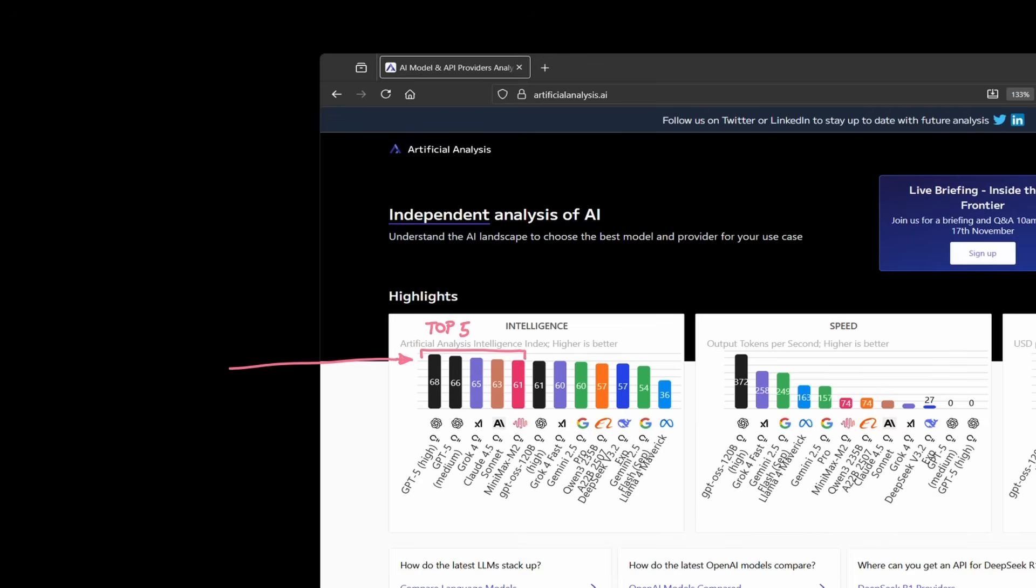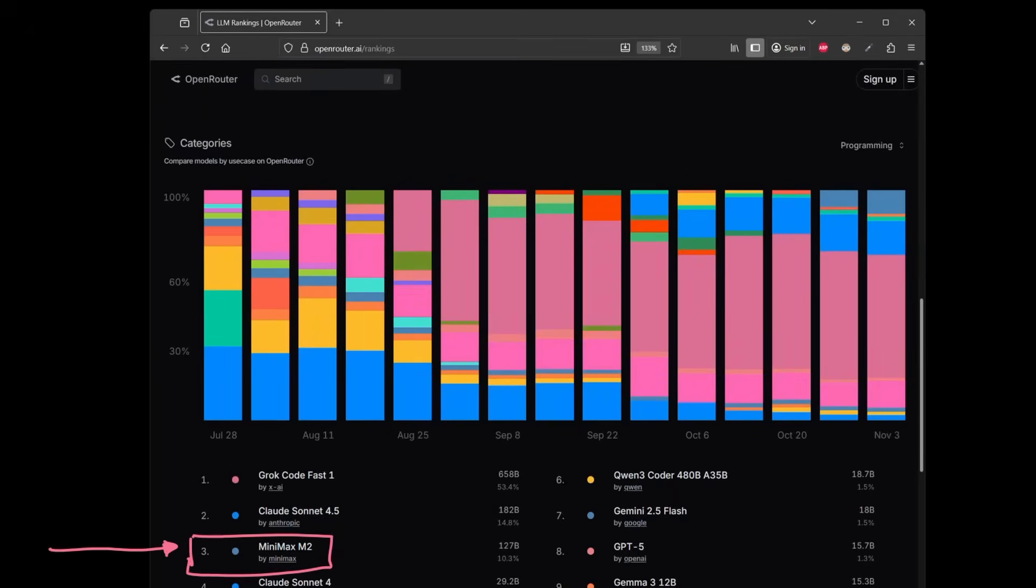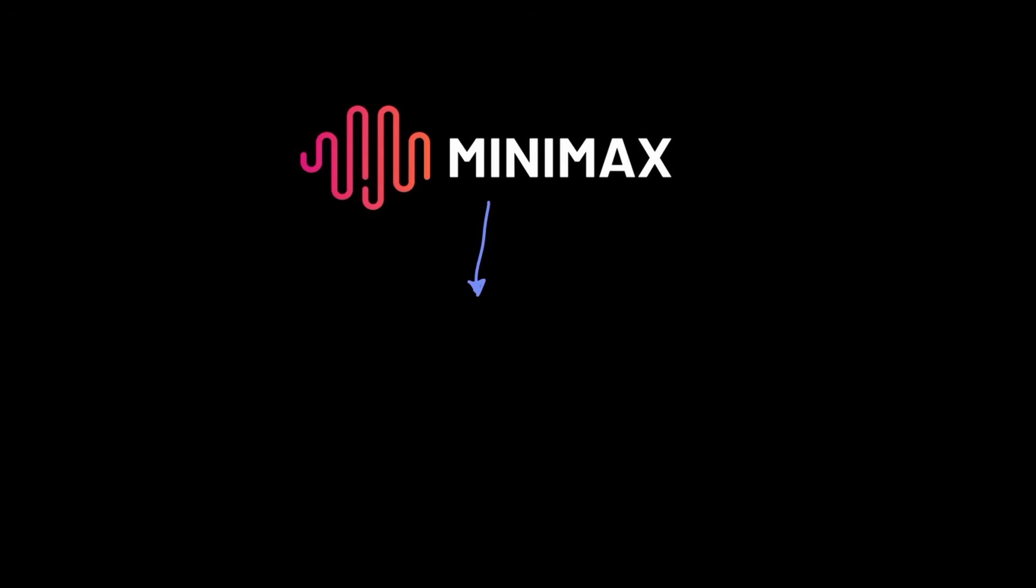How often do you have a model that scores top 5 in the artificial analysis benchmark and yet the model is open source? Also, the model is ranked 3rd place in usage from open router. Minimax just released an open source model called M2. And let's start with why the Minimax M2 model is something that you should really care about.